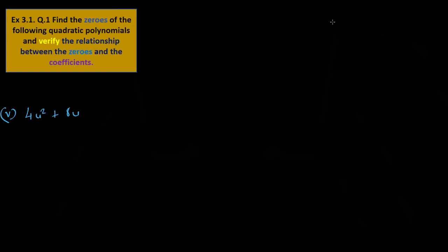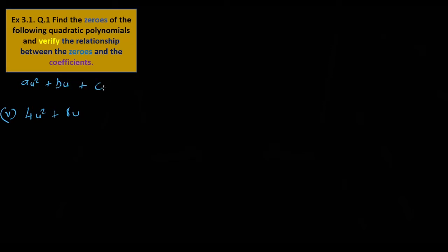4u squared plus 8u — here we go. ax squared plus bx plus c, here we go. In the form au squared plus bu plus c, we identify the coefficients: a is 4, b and c to follow.